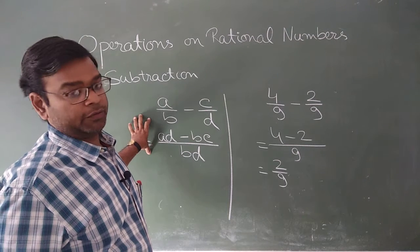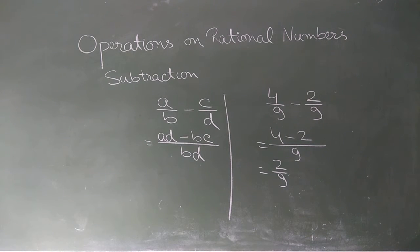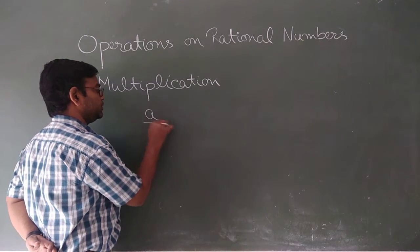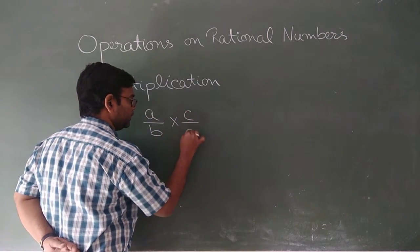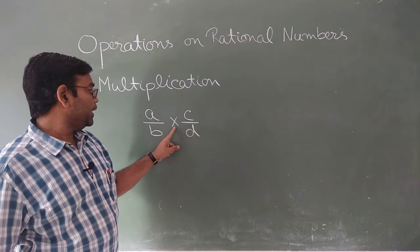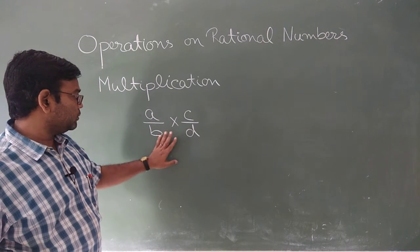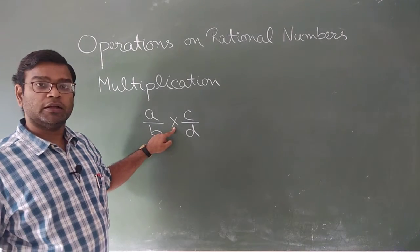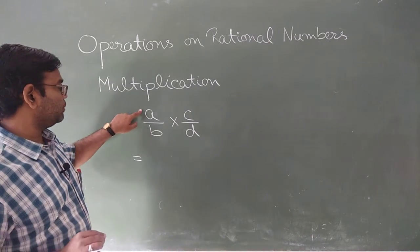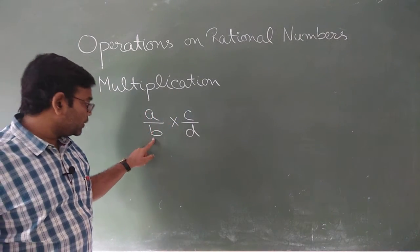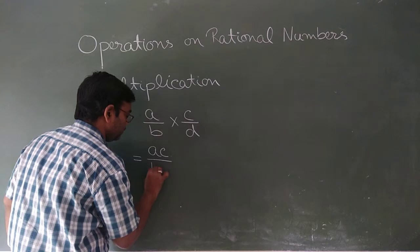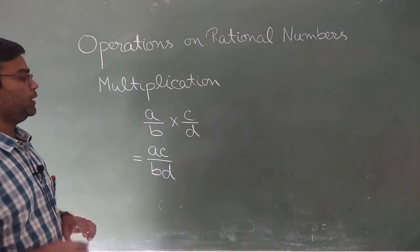Now multiplication and division. For multiplication, suppose we have A/B multiplied by C/D. Always remember that the sign between two rational numbers must be written in the middle. For multiplication: first numerator multiplied by second numerator, and first denominator multiplied by second denominator. So the result is AC upon BD. This is the simplest operation.